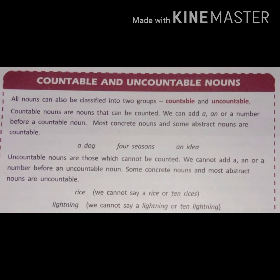Uncountable nouns are those nouns which cannot be counted. We cannot add a, an, or a number before an uncountable noun. For example, 'rice' — we cannot say 'a rice' or 'ten rices.' Similarly, 'lightning' — we cannot add 'a' or 'ten' before it. So countable nouns can be counted and can take a, an or a number; uncountable nouns cannot.